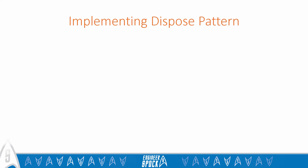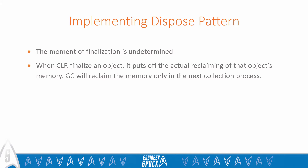The finalization mechanism has some peculiarities. The moment of finalization is undetermined — it completely depends on the will of the CLR. You can't force the CLR to finalize a particular object by any means. As a corollary, you can't be sure about the current state of the program at the moment when finalization starts. When the CLR finalizes an object, it puts off the actual reclaiming of that object's memory. The GC will reclaim the memory only in the next collection process, which is quite unfortunate in high-performance scenarios.